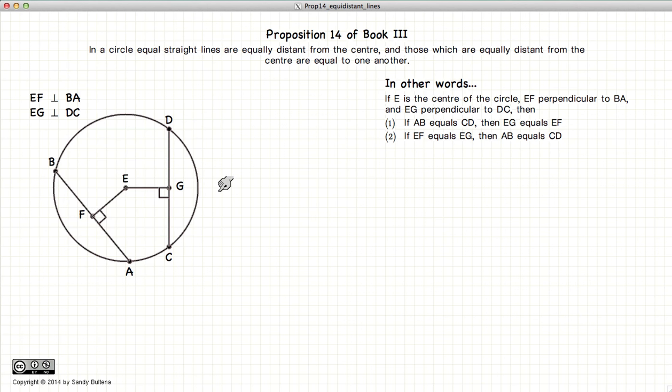So this proposition states that if AB is equal to CD, then the distance from the center is also equal. In other words, EF will equal EG. Now conversely, if the distance from the center is equal, in other words these two lines are equal, then these lines BA and CD will also be equal.